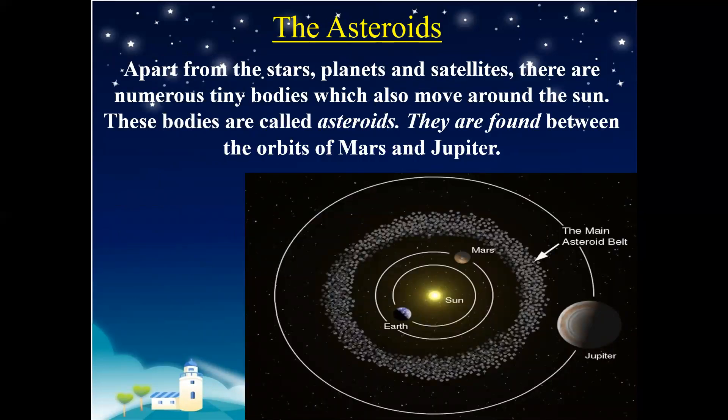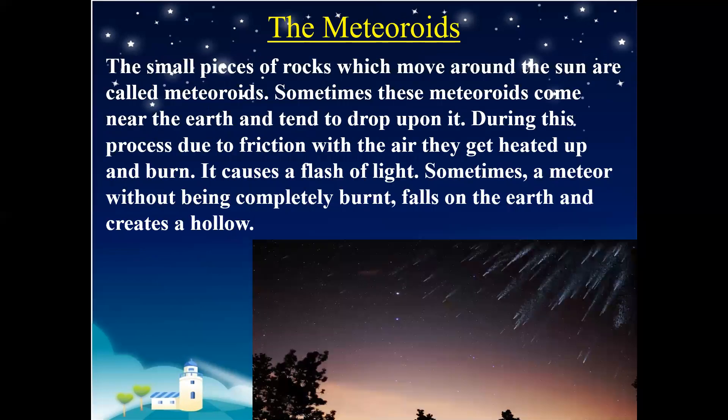Let us now study about the other celestial bodies in the solar system — asteroids and meteoroids. Apart from stars, planets, and satellites, there are numerous tiny bodies which move around the sun. These are known as asteroids, and they are found in the belt between the orbits of Mars and Jupiter. The small pieces of rocks which move around the sun are meteoroids. Sometimes these meteoroids come near the Earth and tend to drop upon it. During this process, due to friction with the air, they get heated up and burn, causing a flash of light. Sometimes a meteor, without being completely burnt, falls on the surface of the Earth and creates a hollow.